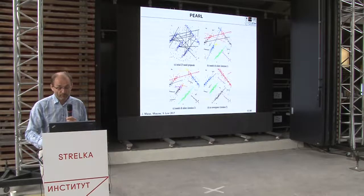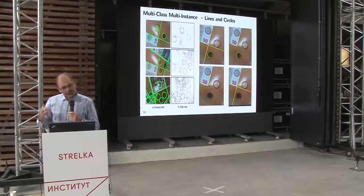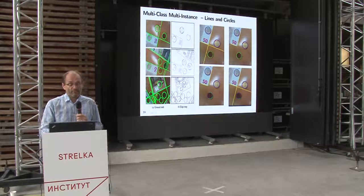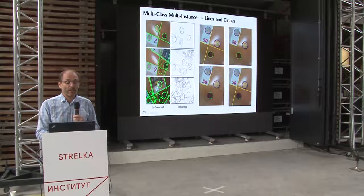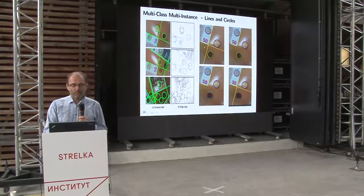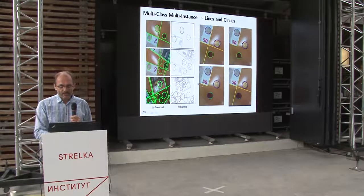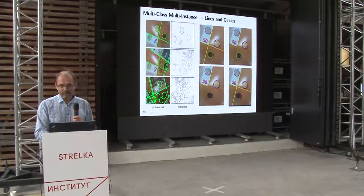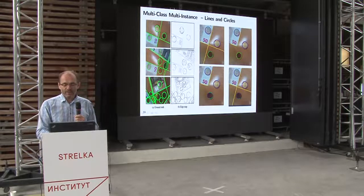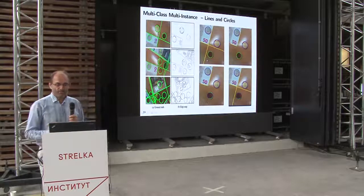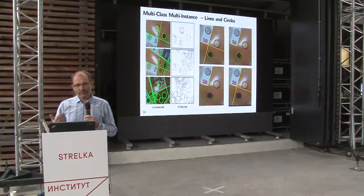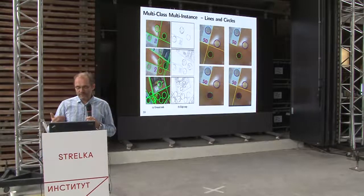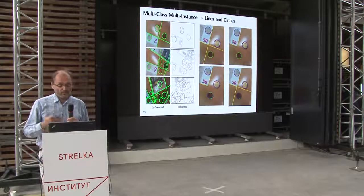The richness of the multi-class multi-instance problem is notable — we can treat data as line segments plus circles, or line segments plus circles of different radii, or coin circles of different radii. If you have a method that easily handles adding a different class, you get a very flexible algorithm. PEARL-like methods and Multi-X can handle this without problems.